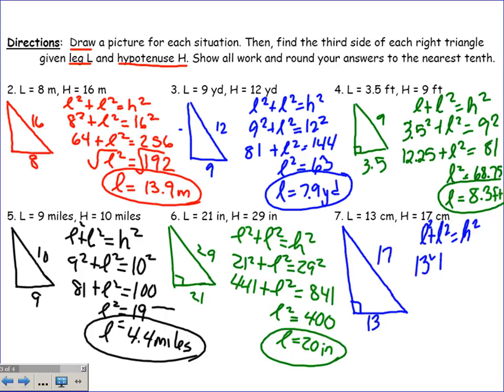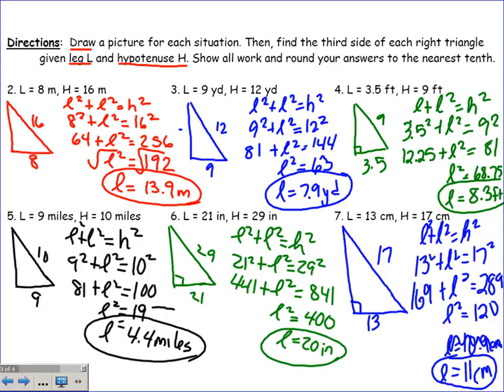L squared plus L squared equals H squared. This would be 13 squared plus L squared equals 17 squared. 169 plus L squared equals 289. If I take 289 and subtract 169, I have 120, which is just a little bit less than 121, so I'd probably say we're at 10.9 centimeters. It rounds up to 11 centimeters.